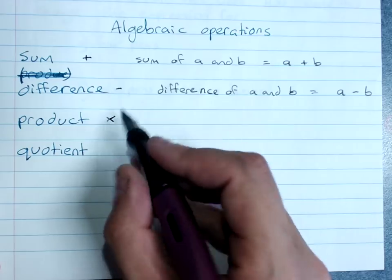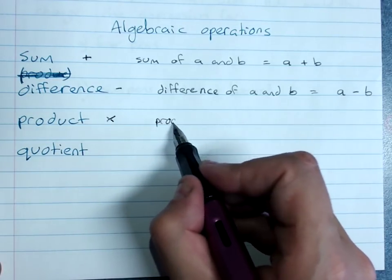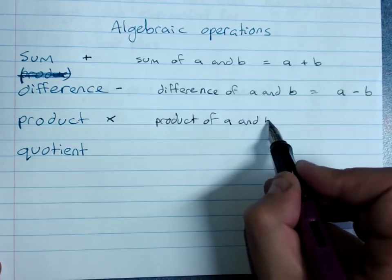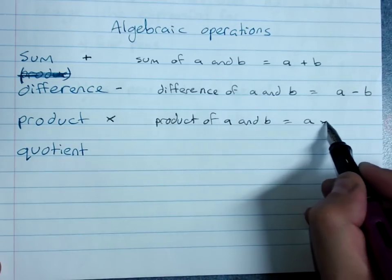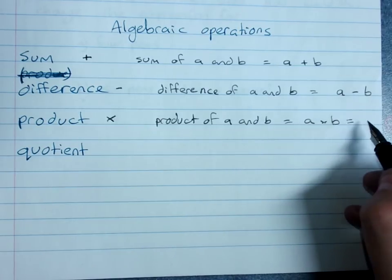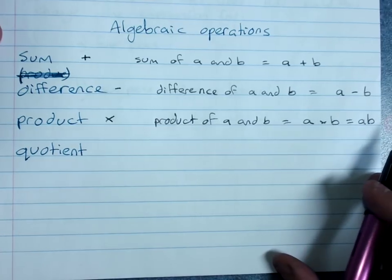The product is times. So the product of a and b is a times b. And you'll remember in algebra we don't write the times sign. We just write the letters next to each other. ab.